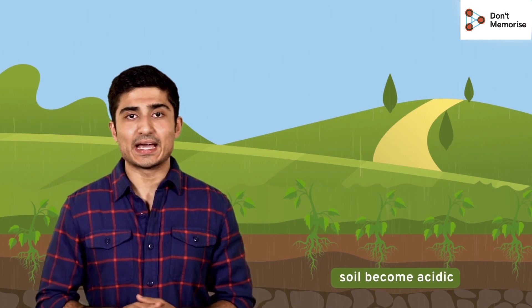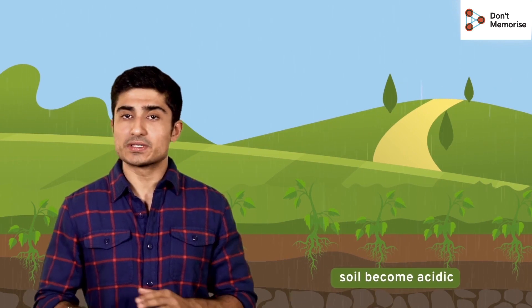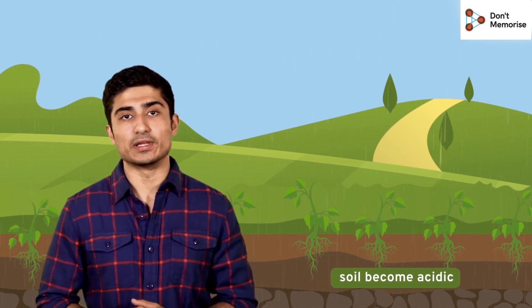So, when this acidic rainwater falls on plants, the leaves turn yellow and fall off. Likewise, a lot of agricultural crops are also affected. Acid rain makes the soil acidic and as a result, crops cannot grow fully.